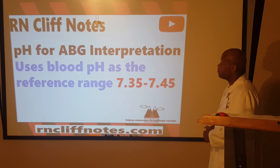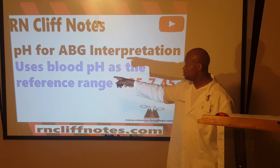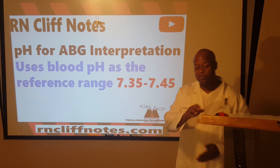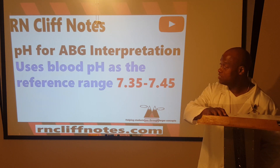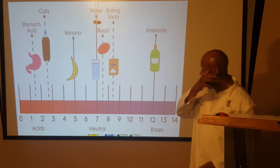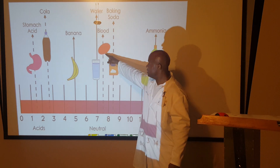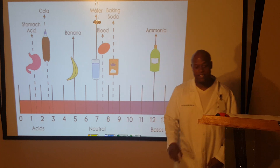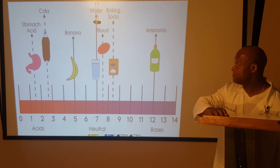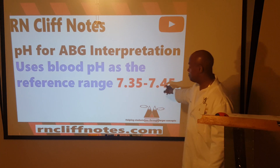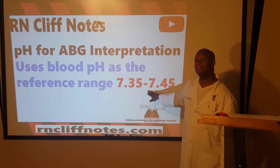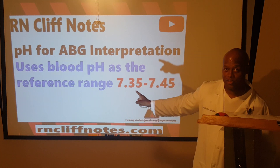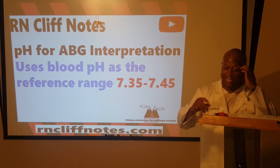For ABG interpretation, we use blood pH as our reference. We just saw that blood sits slightly higher than water on the pH scale. The normal blood pH range is 7.35 to 7.45 — slightly more alkaline than water. That's our reference range when doing ABG interpretation. Lock that in your mind.